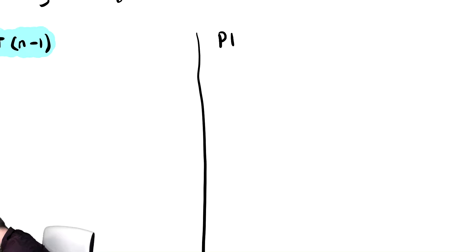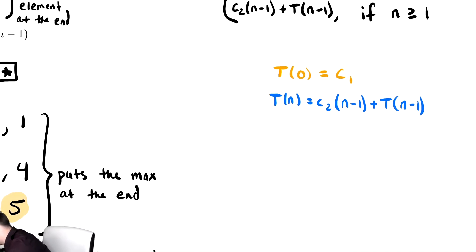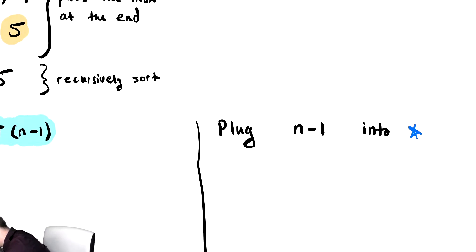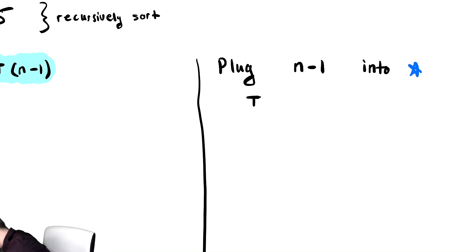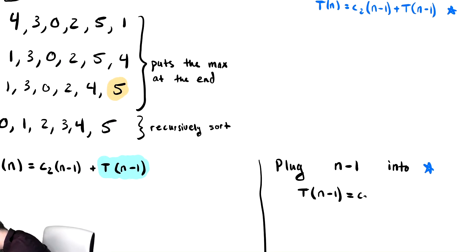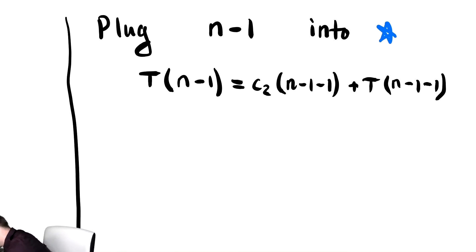Let's label that equation again as we did in the past. I'm going to call it star again. So plug n minus 1 into star. If we do that, we get T of n minus 1 on the left-hand side is equal to C2 times n minus 1 minus 1 plus T of n minus 1 minus 1. Let's collect together some like terms in this expression, and we get T of n minus 1 is equal to C2 times n minus 2 plus T of n minus 2.